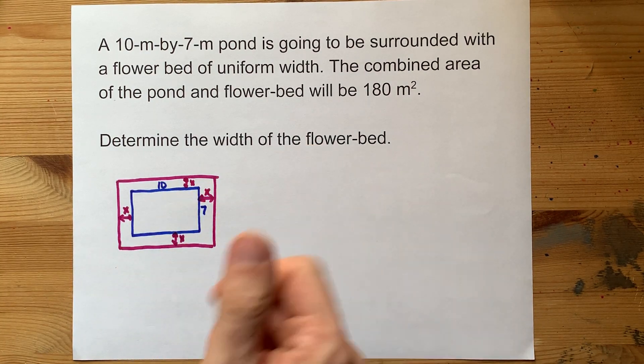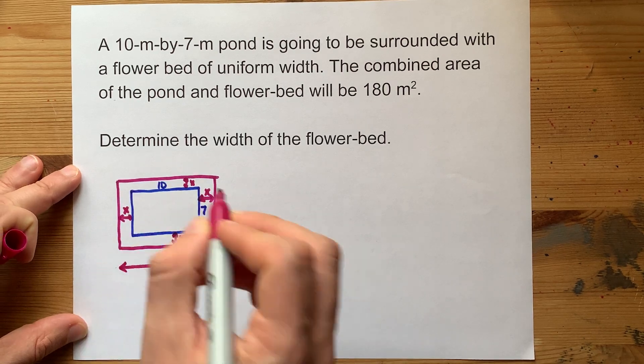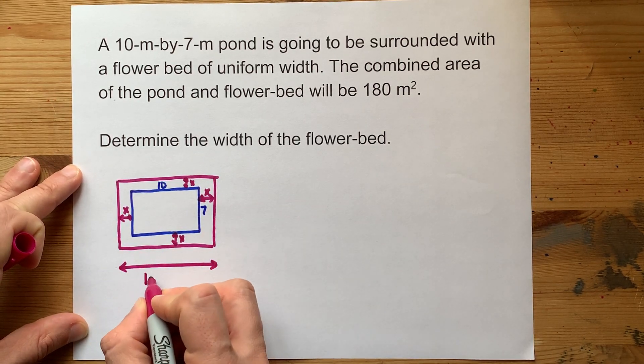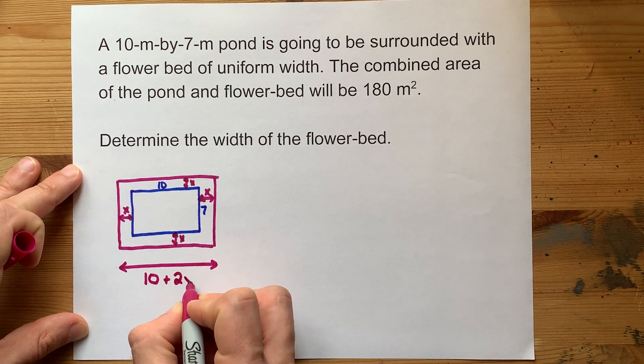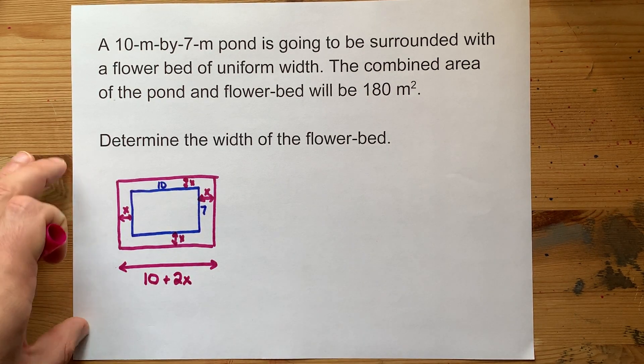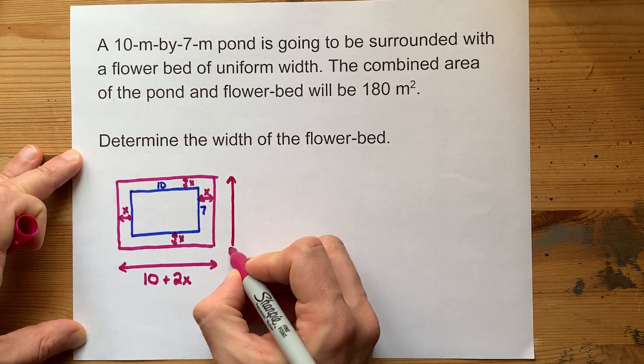Now that's significant because it means the total length of the pond plus flower bed in the long direction is the same 10 meters plus 2 of those widths. So for me, it's plus 2X. The increase to the height is similar.